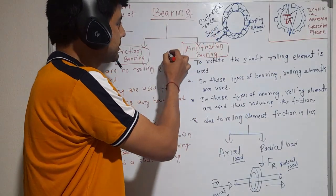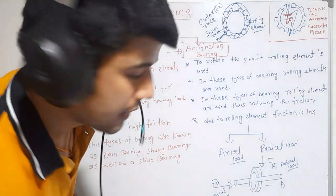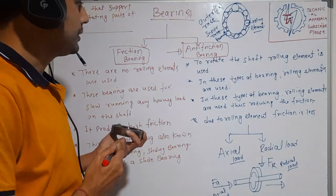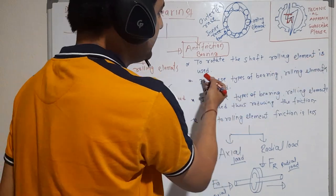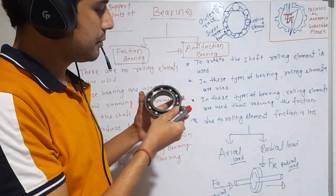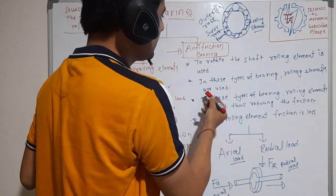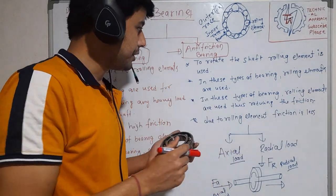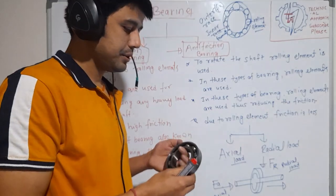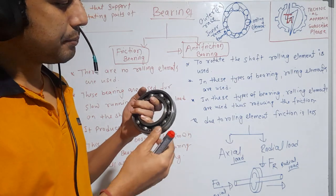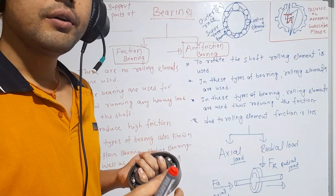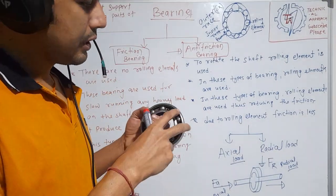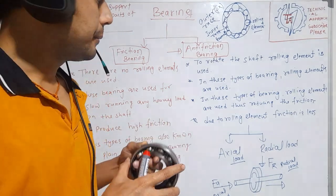The other type is anti-friction bearing, which we mostly use. In anti-friction bearing, a rolling element is used to rotate the shaft. There is a rolling element inside called a ball. Rolling elements are used, thus reducing the friction. Inside this bearing, rollers or balls reduce the friction. Due to rolling elements, friction is less.